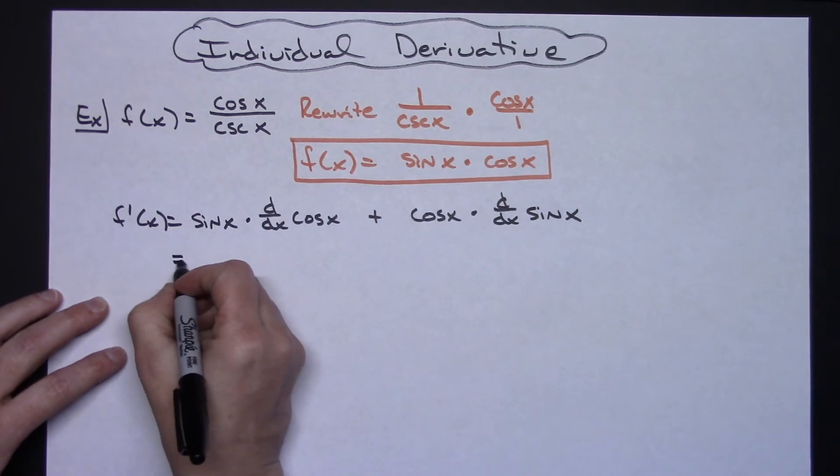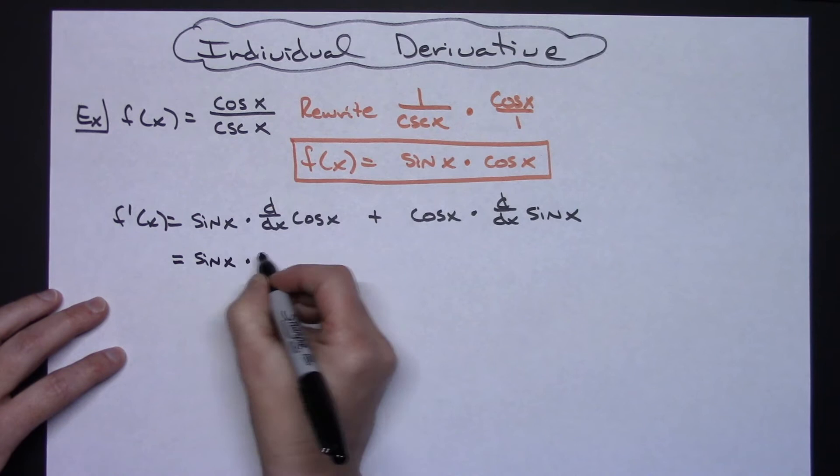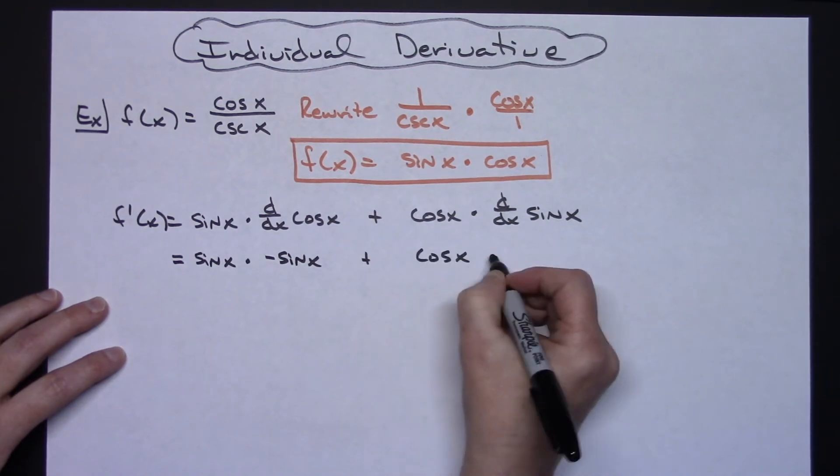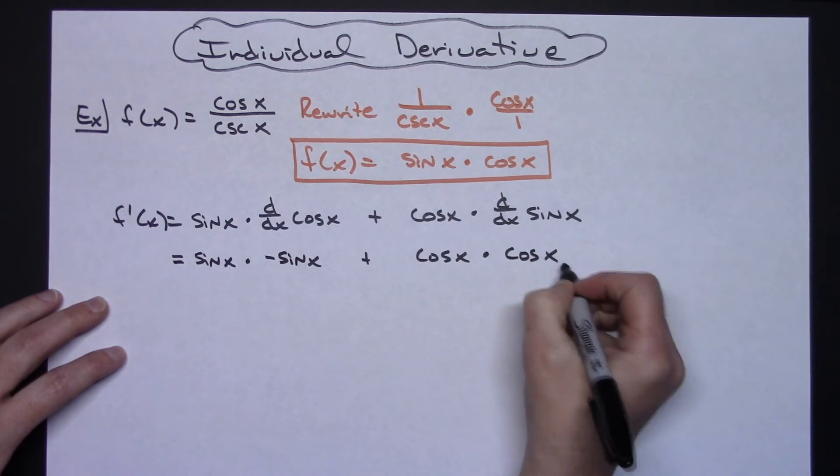Continuing by actually doing the derivative here, I'm going to have sine x times derivative of cosine, which is negative sine x, plus cosine x times derivative of sine, which is cosine x.